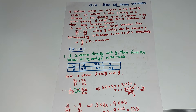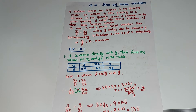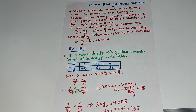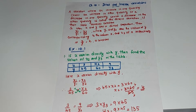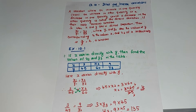What do you mean by direct variation? If both quantities either increase or both decrease, the variation is called direct variation. For example, consider price and quantity. If price increases, the quantity will increase. If the quantity decreases, the price will decrease. So both are in direct variation.